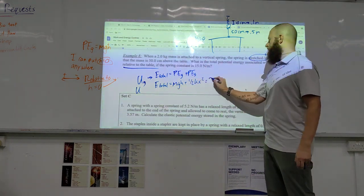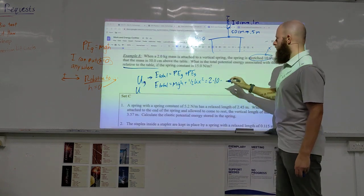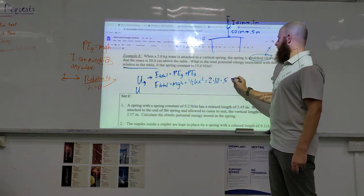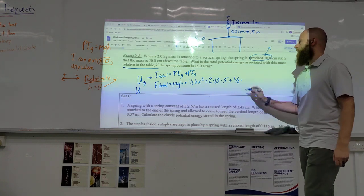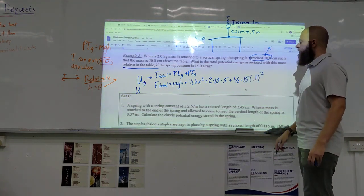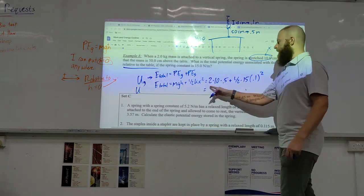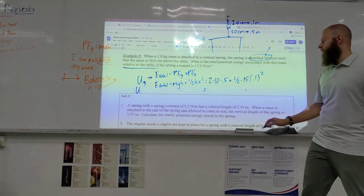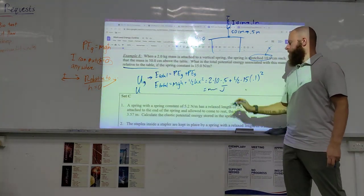My mass is 2, 2 times 10 times my height is 0.5, plus one-half times K is 15, 0.1 squared. Then, we solve that, put it in your calculator, get a number, something, something, joules.